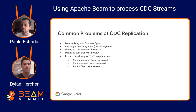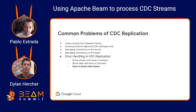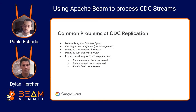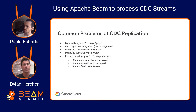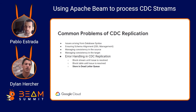Finally, there's error handling in CDC replication. How are we going to make sure that no data is ever lost? Should we block the stream if an error occurs and wait for manual intervention? Should we block just a table? Or should we store the data in a dead letter queue and then attempt to reprocess it later? Our design focuses on a dead letter queue and making sure that recycling data happens smoothly.